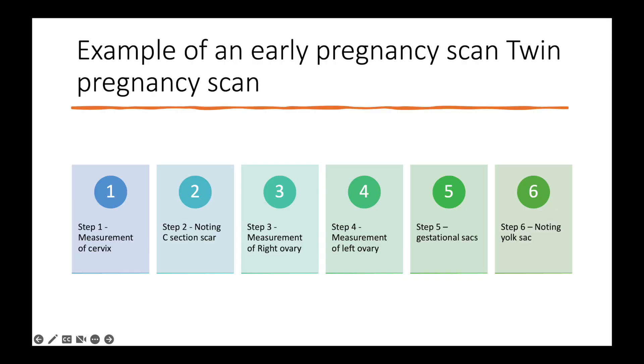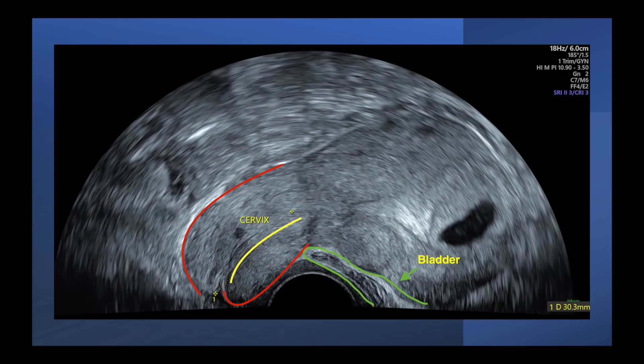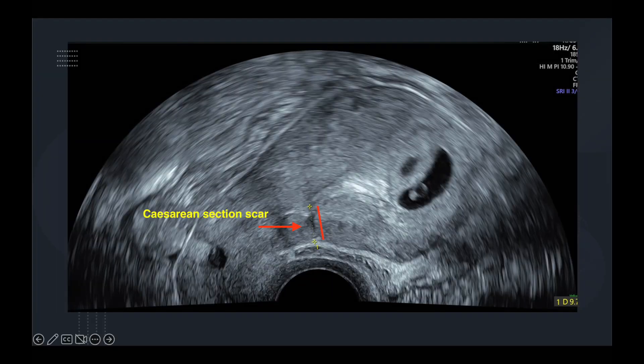This is an example of an early pregnancy scan which shows steps one through six. Step one is measurement of the cervix. The red line highlights the entire cervix, with a yellow line in the center being the endocervical canal. It starts from the reflection of the bladder to the lip of the cervix.